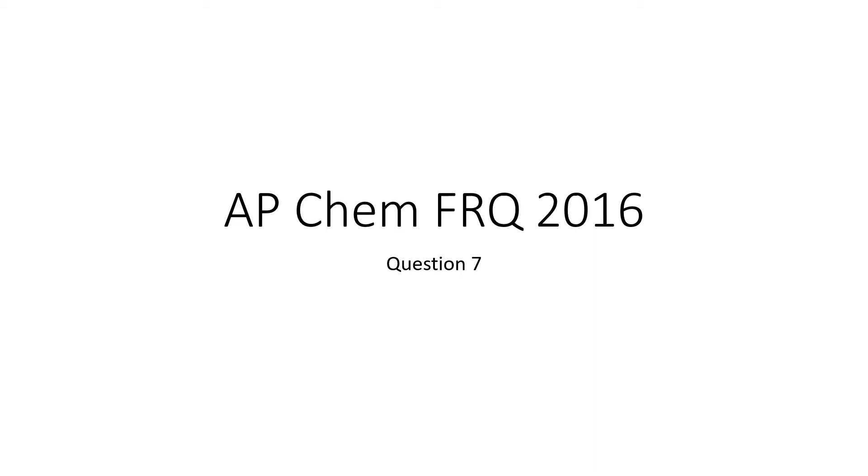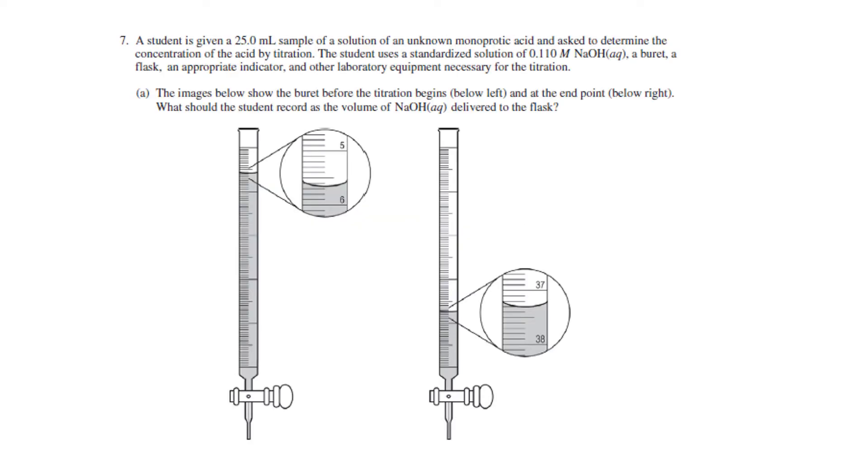All right, final question for 2016, question number seven. Again, it's a short response. This problem is a titration problem where they're telling us that we're starting with 25 milliliters of a monoprotic acid.